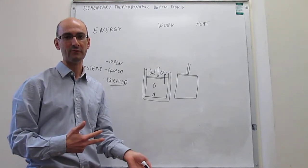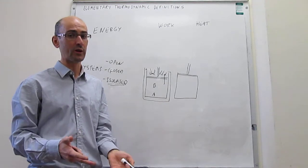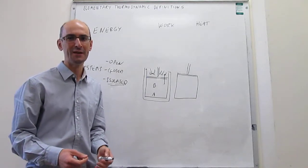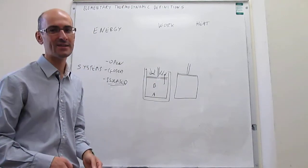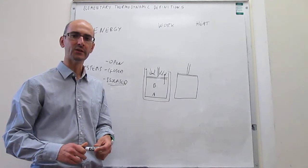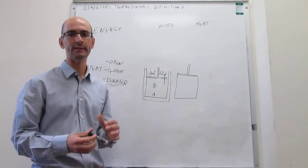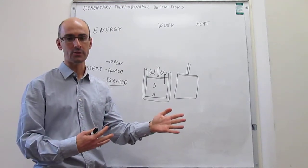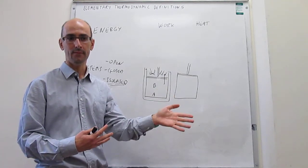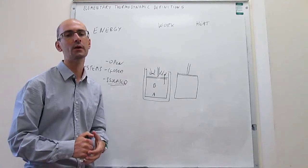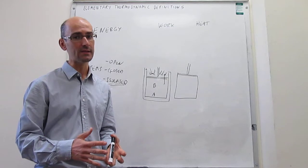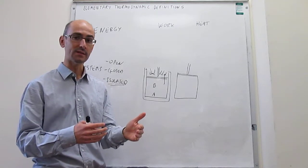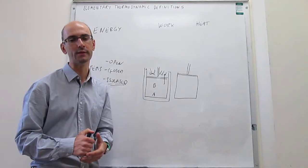Now we have to define what heat is. What we're going to say about heat for now is that it is any type of energy transfer that is not work. Since there are only two types of energy transfer and we know what work is, then whatever is not work has to be heat. Generally, the most common form of energy transfer as heat happens when you have a difference in temperature between two bodies — if your surroundings are at a high temperature and your system is at a cold temperature, then there's going to be an energy transfer as heat from the hot body to the cold body. However, it's not always the case that you need a difference in temperature; it's also possible that systems and surroundings at the same temperature might exchange heat, and we'll define that a little bit later on.